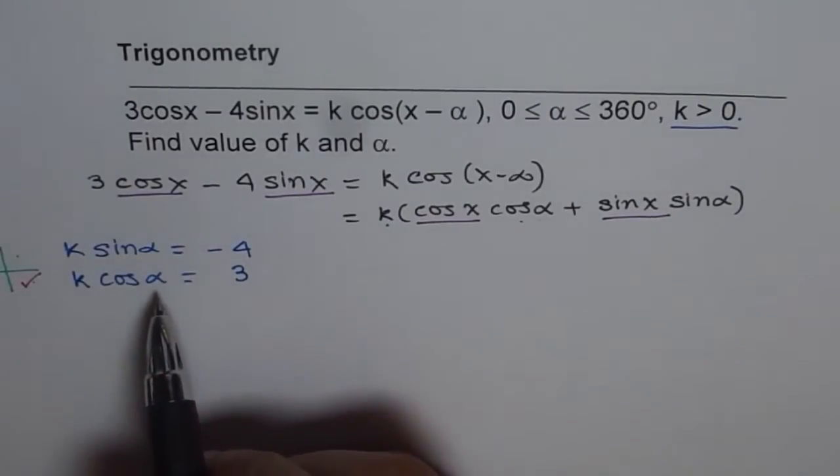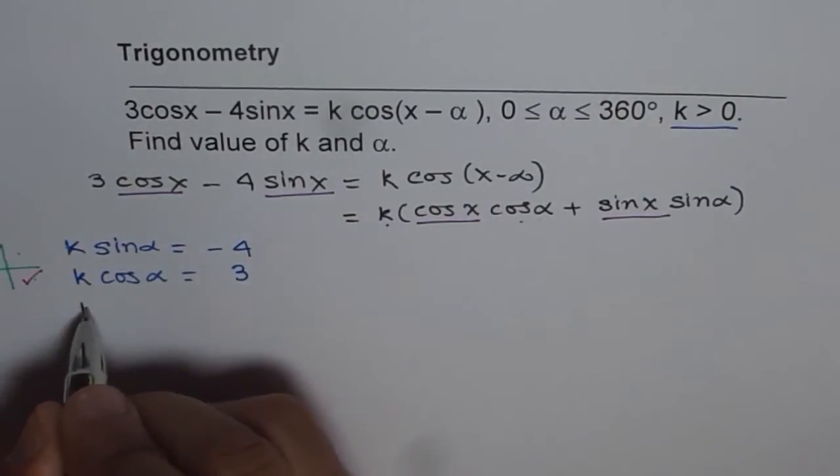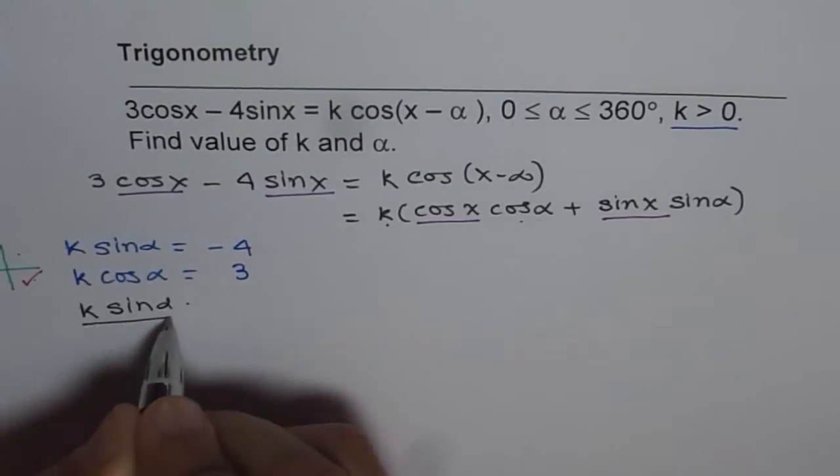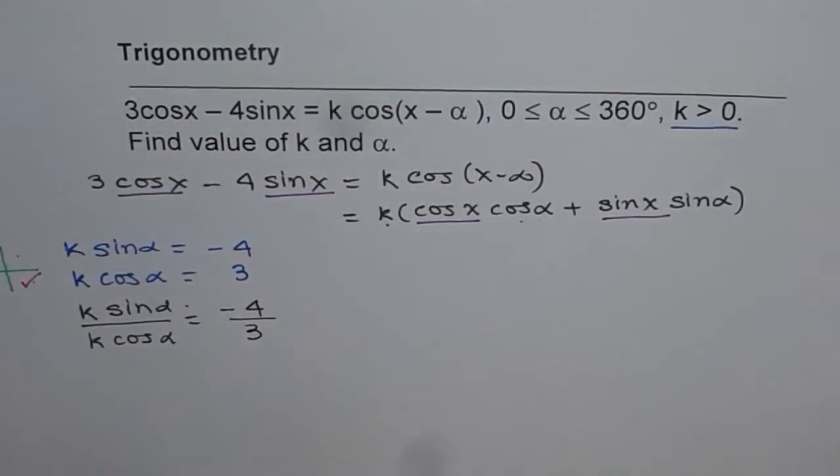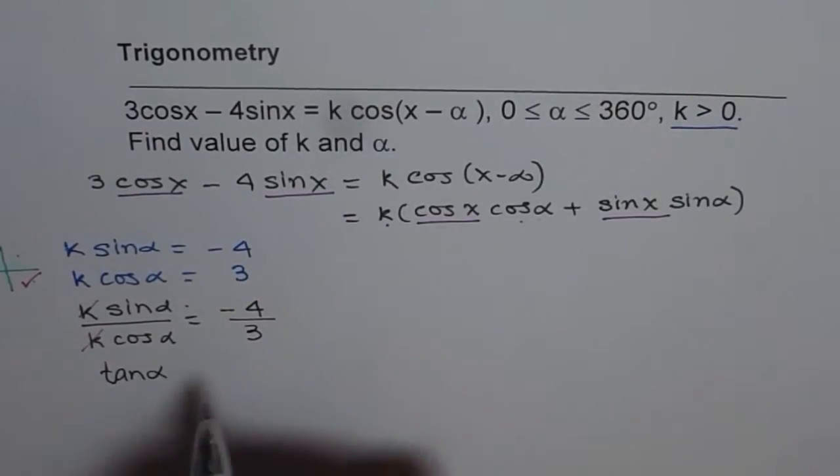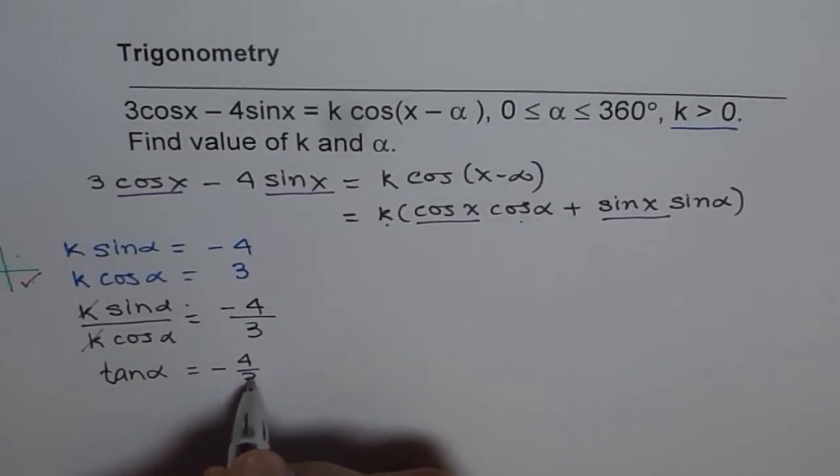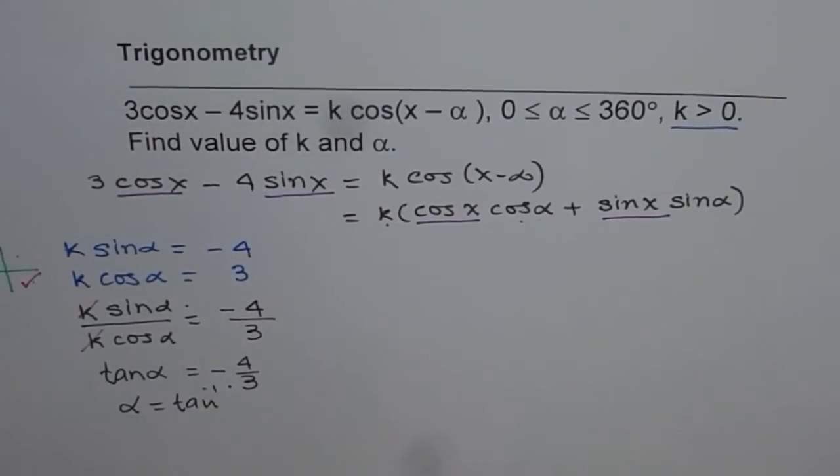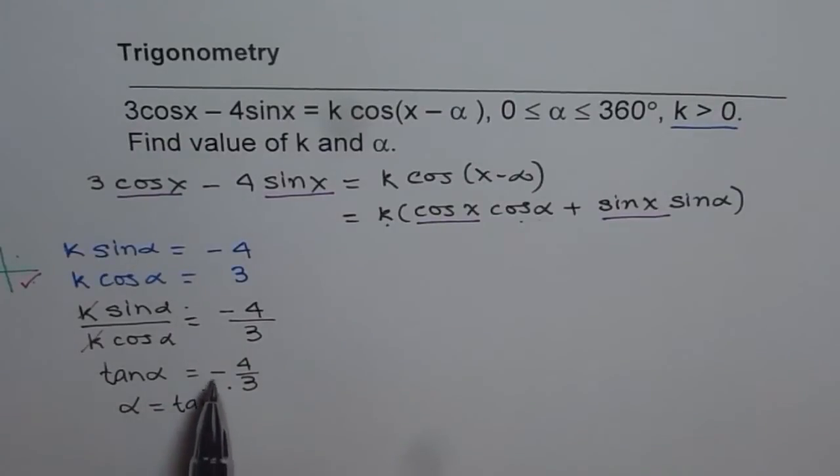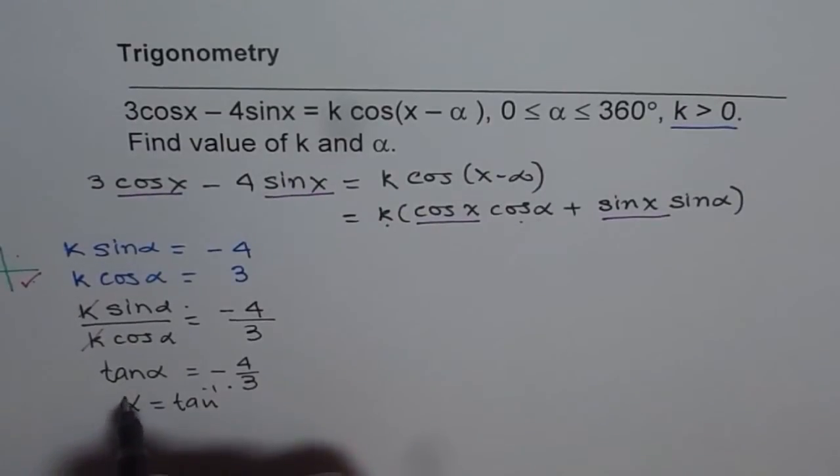Now, we need to find angle alpha. So we can divide these two equations, and then what do we get? If we divide, that is to say, k times sin alpha over k times cos alpha equals to minus 4 over 3. Now k and k cancel out, and you get tan alpha equals to minus 4 over 3. So what we will do here is, we will just forget about the minus sign for the time being. Let's find the related acute angle.